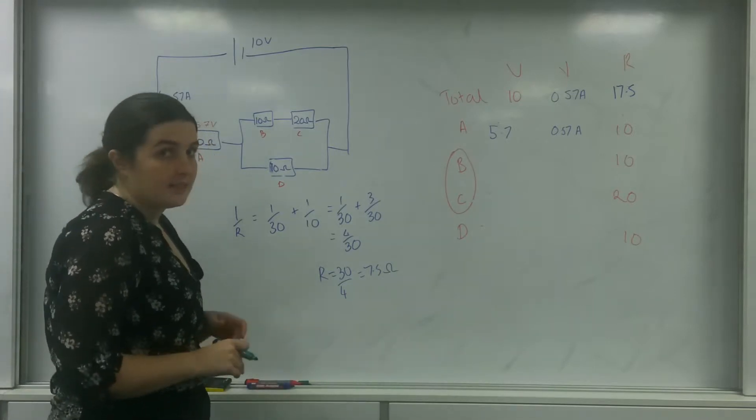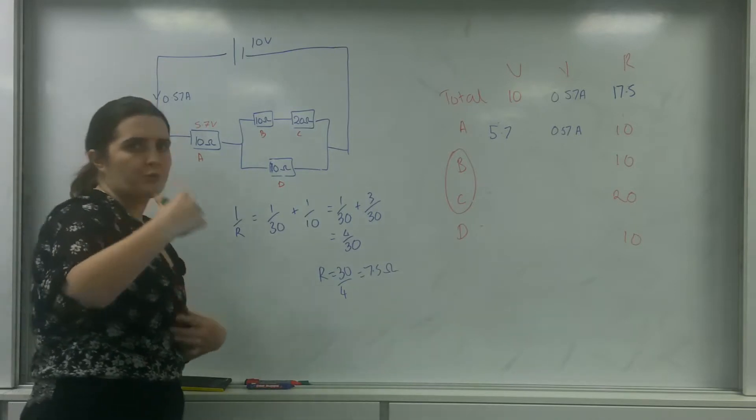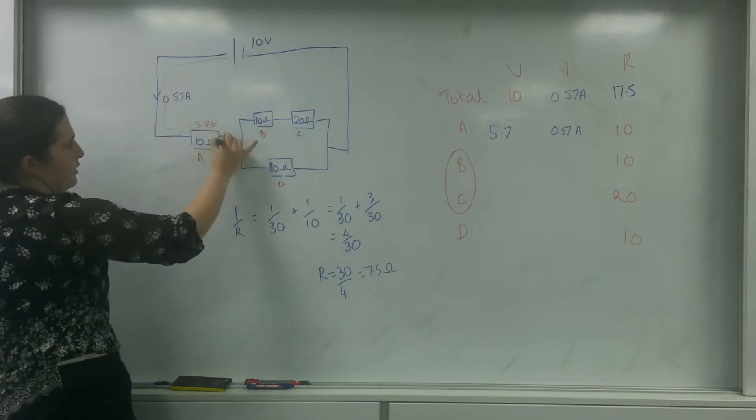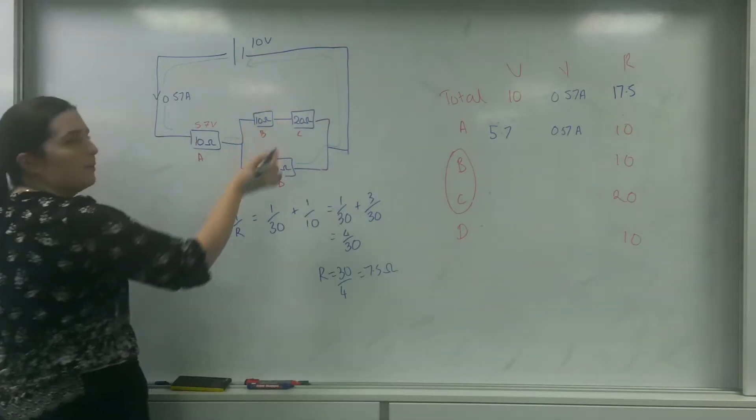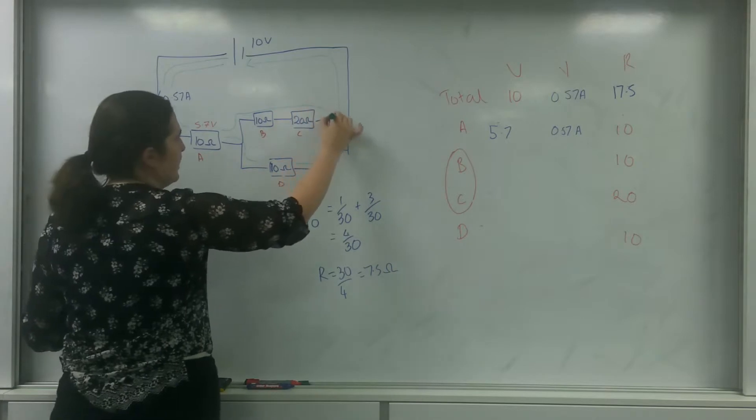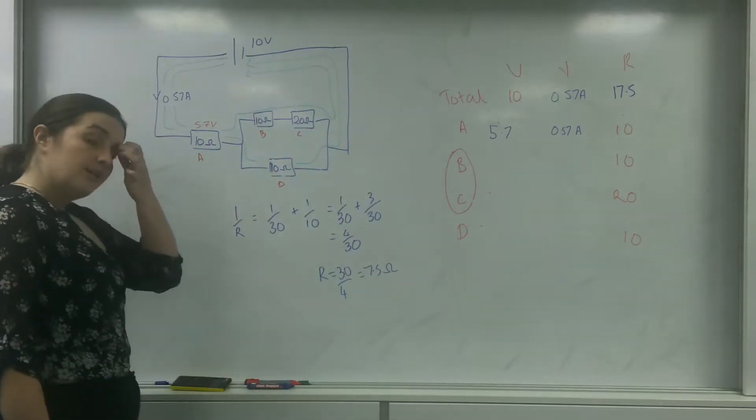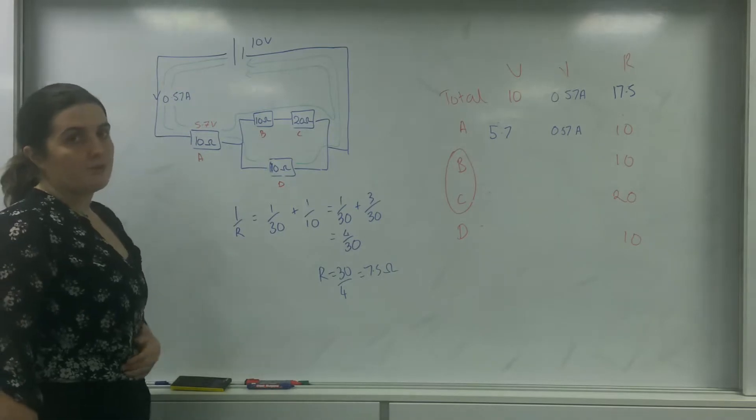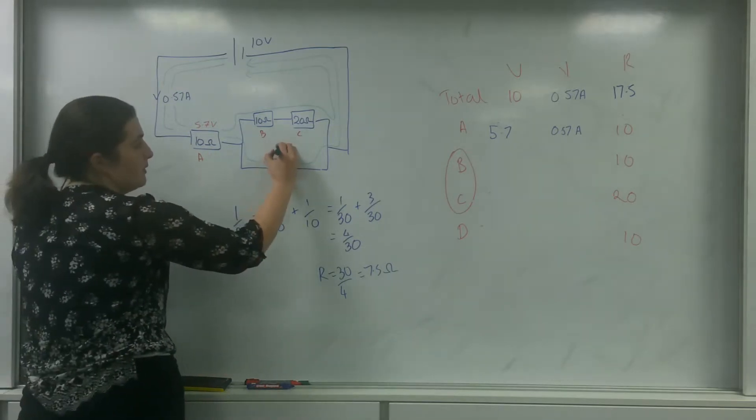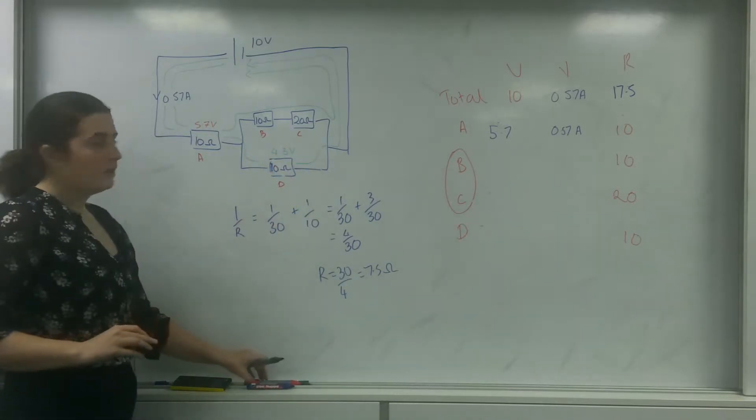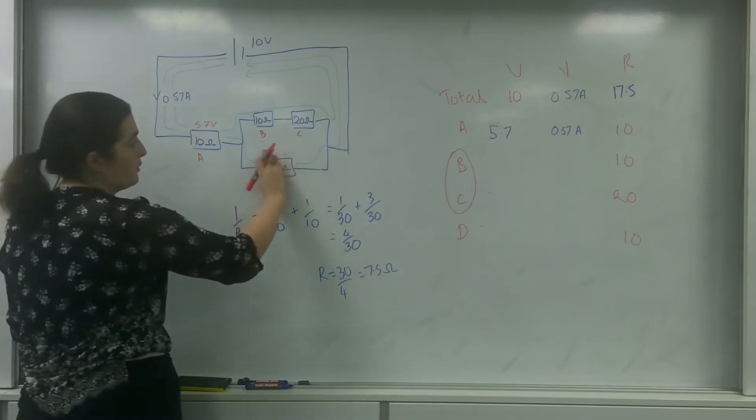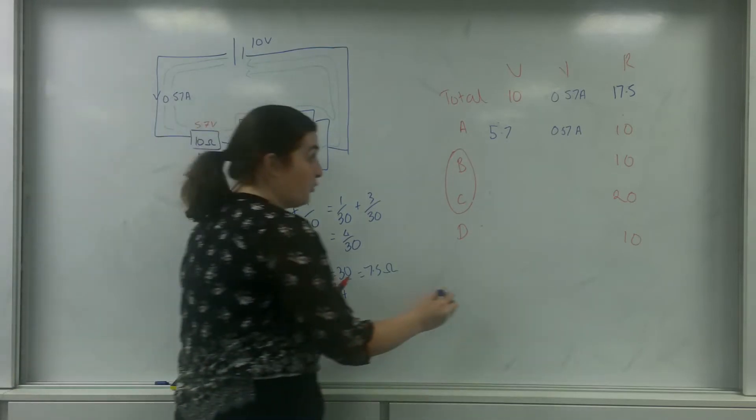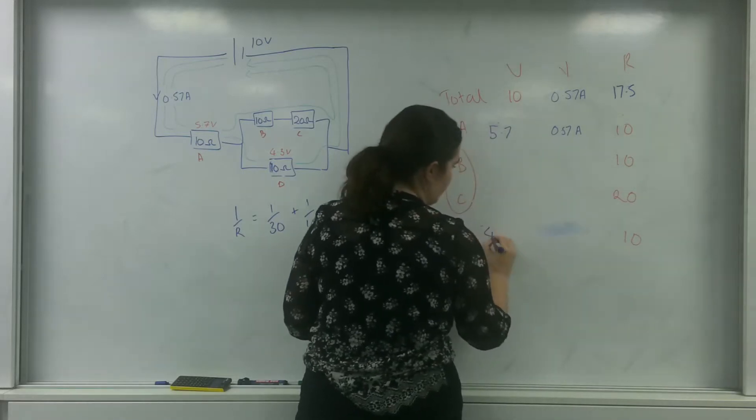Now, Kirchhoff said in his second law about voltage that charged particles, electrons will make one loop, and in that loop they must lose all the potential they have. So I have 10 volts of potential, and my charged particles could do that loop or they can do that loop. Either way, I know that if I've lost 5.7 volts here, that during my whatever loop I've taken, I must lose the rest. Which means that across this one here, it must be 4.3 volts. 10 take away 5.7 is 4.3. So this means that this D here has 4.3 volts.